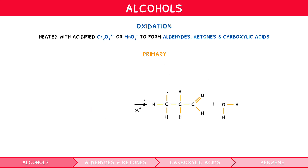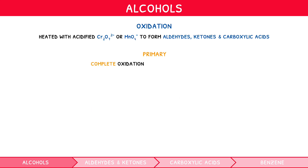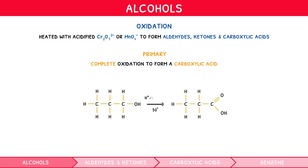However, if a primary alcohol undergoes complete oxidation — either by conducting the heating under reflux, or by capturing the aldehyde and reheating it again with either oxidising agent — it forms a carboxylic acid. The equation for the complete oxidation of propan-1-ol to form propanoic acid is: CH3CH2CH2OH + [O] → CH3CH2COOH.